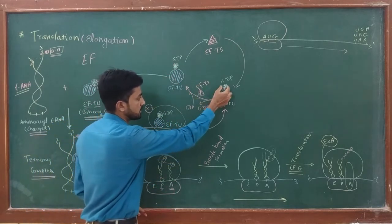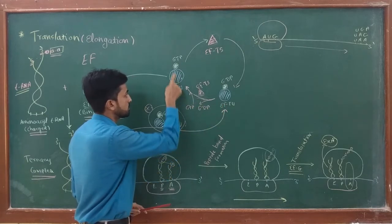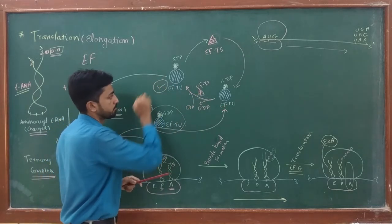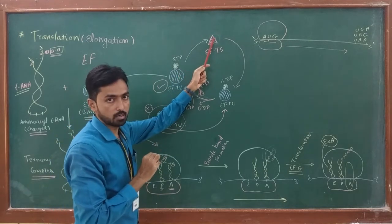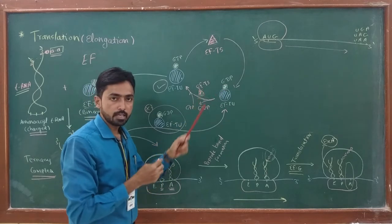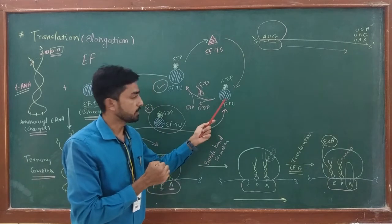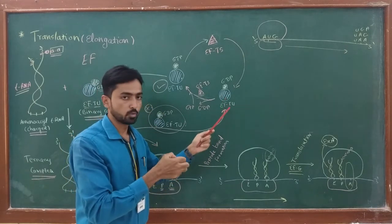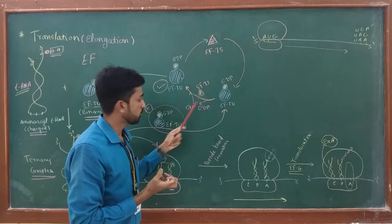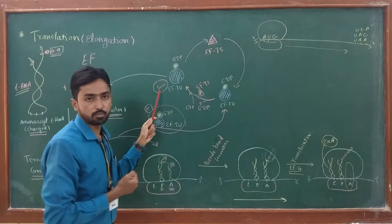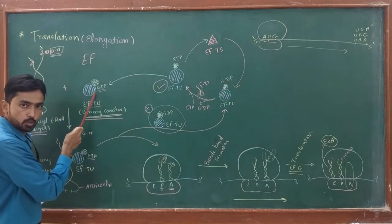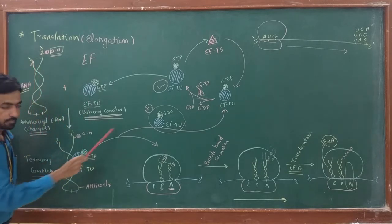EF-Ts catalyzes the reaction: first, EF-Ts removes the GDP from EF-TU, then gets attached to EF-TU forming an EF-TU-EF-Ts complex, and finally this EF-Ts is replaced with GTP. Once GDP is replaced with GTP, EF-TU is activated again while EF-Ts is recycled. EF-TU is now again ready in its active form for binding to tRNA and bringing it into the elongation process.